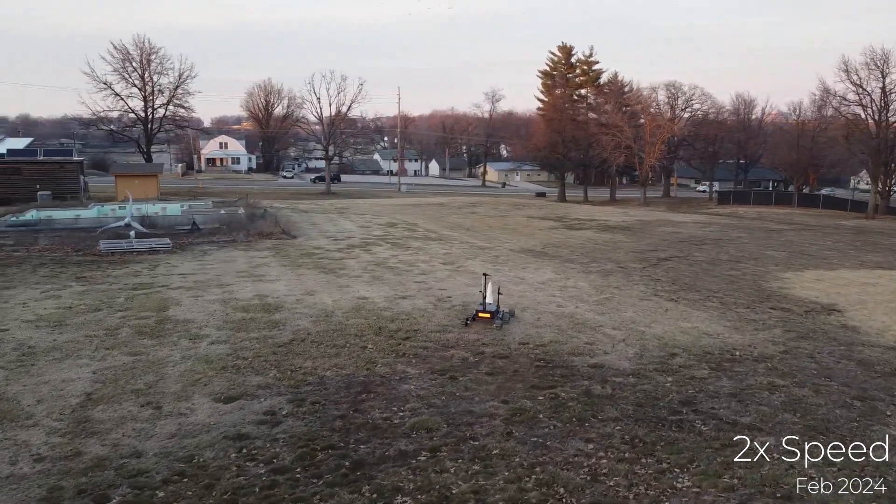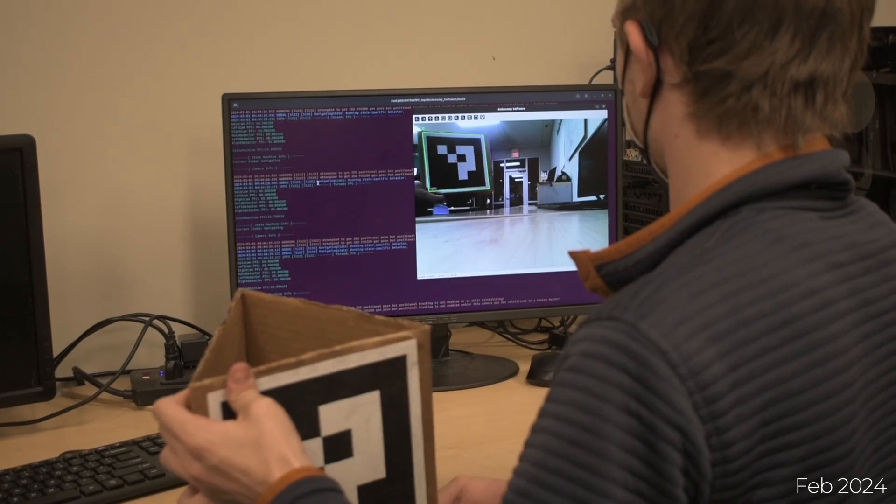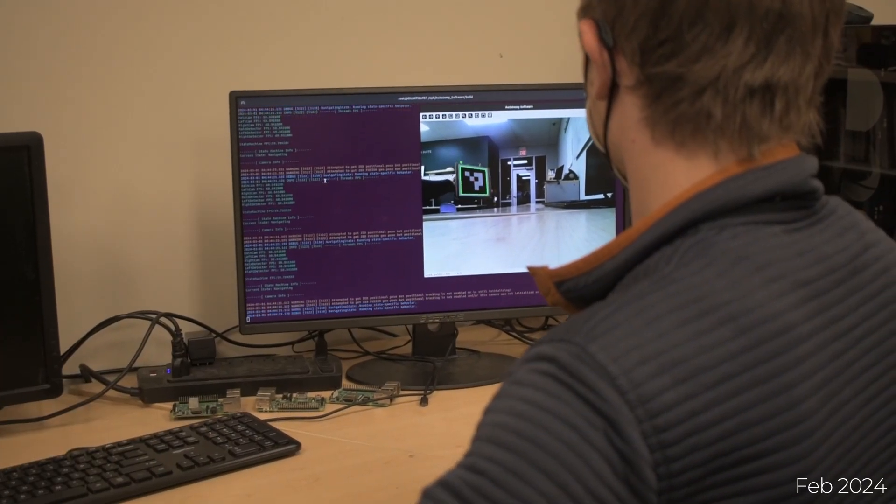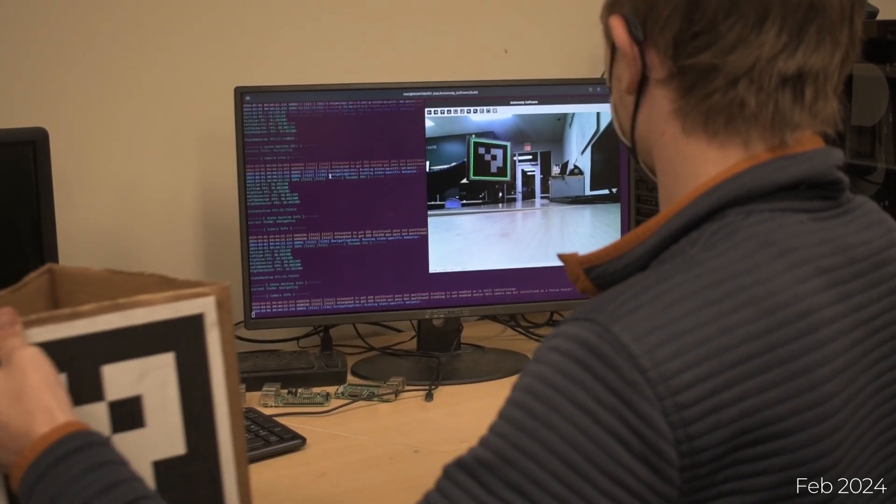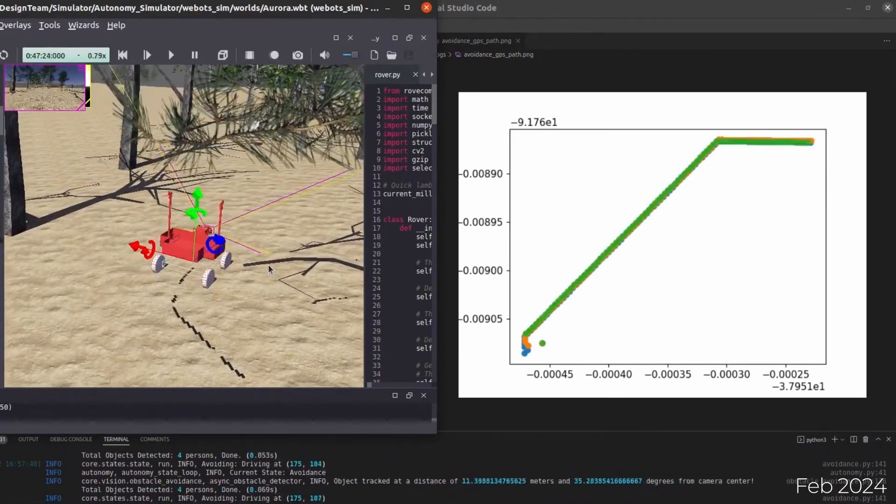The rover's differential GPS enables precise point-to-point navigation. A ZED 2i stereo camera, two ZED minis, and a fisheye camera are used to detect surrounding objects and AR tags. For navigation, an A-star pathfinder is used to chart the shortest path around obstacles to a goal waypoint.